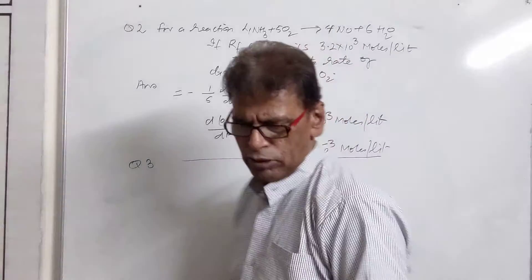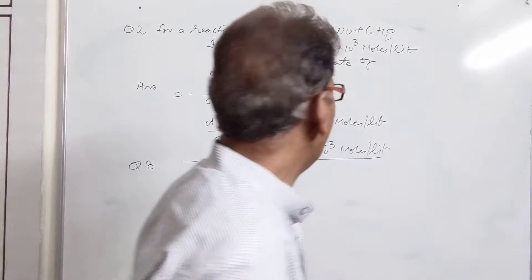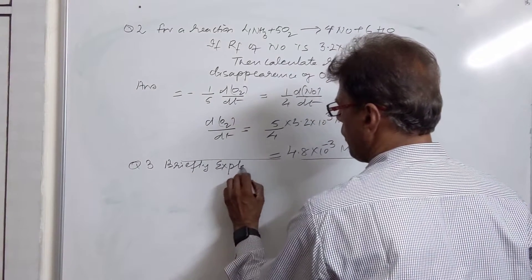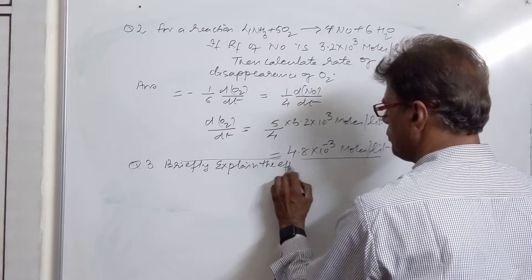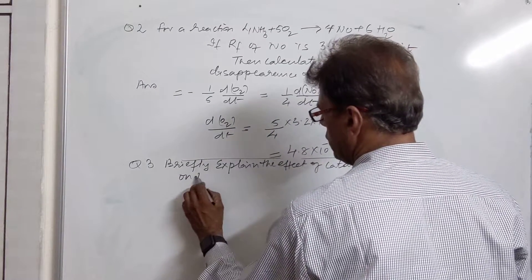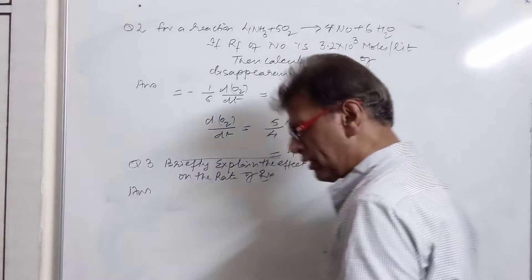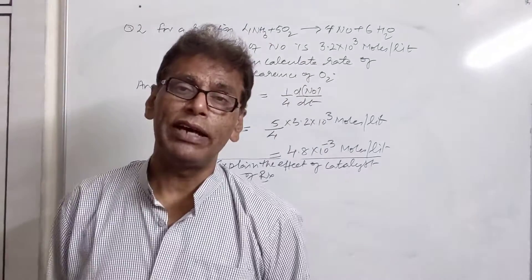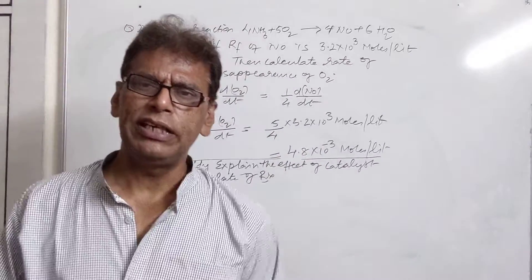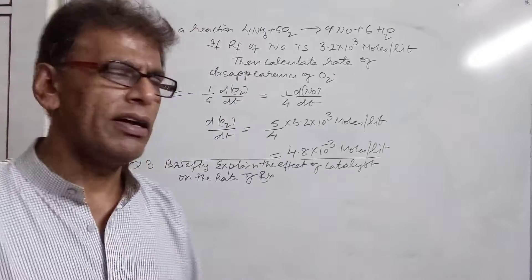Now question number 3: briefly explain the effect of adding a catalyst to a reaction on the rate of reaction. A catalyst is a substance which alters the rate of reaction without undergoing any change in its own concentration or composition. That is called a catalyst.